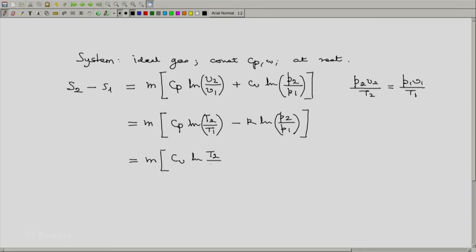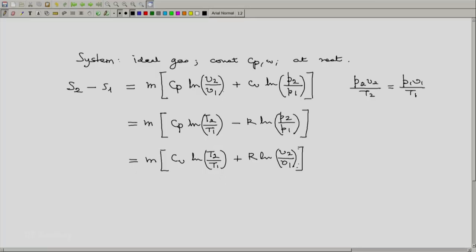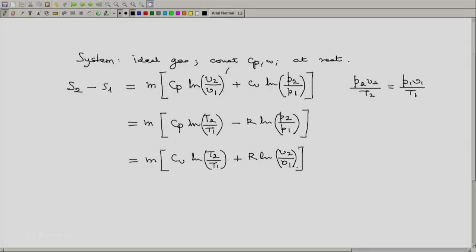In terms of temperatures and volumes, Cv logarithm of T2 by T1 plus R logarithm of V2 by V1. And remember before we close that although we have a ratio of specific volumes here as well as here, since it is a closed system with fixed mass, if it is convenient the specific volume ratio can be replaced by the ratio of actual volumes. Thank you.